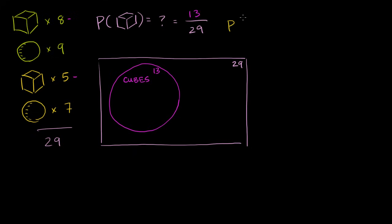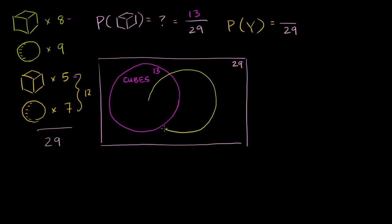Now let's ask a different question: what is the probability of getting a yellow object, either a cube or a sphere? There are 5 plus 7, which is 12 yellow objects in the bag. We have 29 equally likely possibilities, and 12 meet our criteria. So the probability of getting a yellow object is 12 over 29.